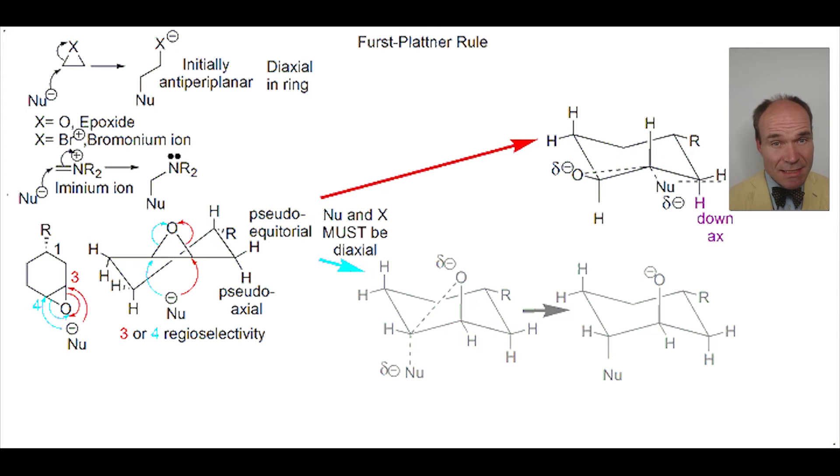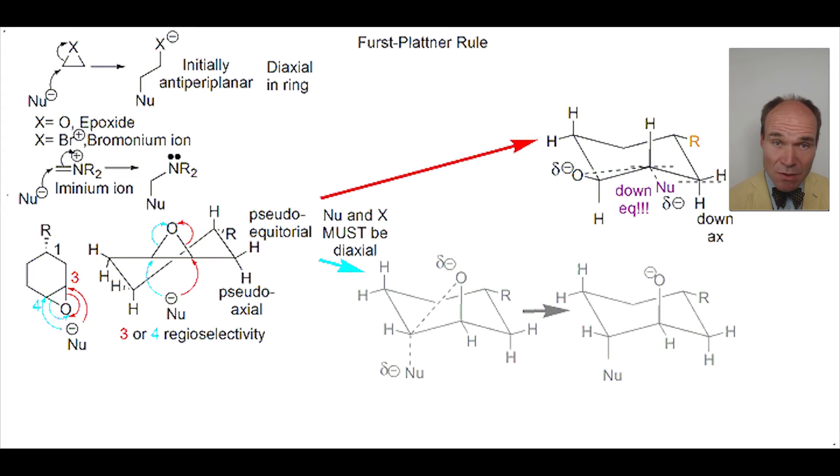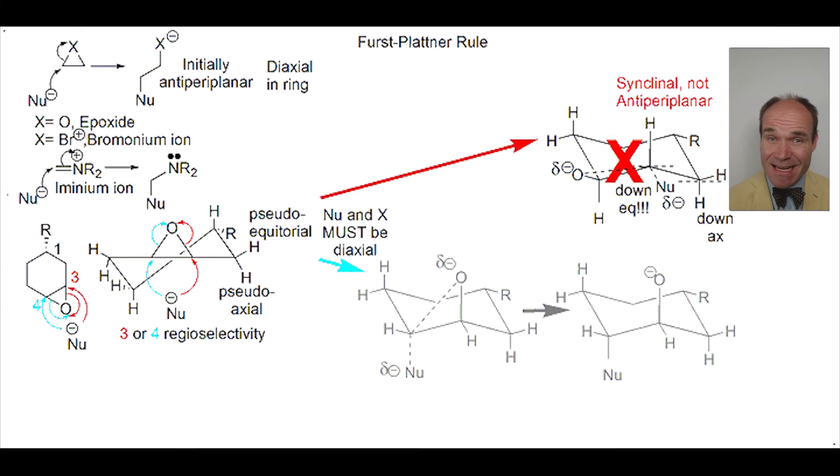This hydrogen substituent is down and axial. So, on the next carbon, where the nucleophile is also down, it must be equatorially oriented, because the R group must be equatorial to avoid 1,3-diaxial interactions. The problem is that the nucleophile isn't anti-periplanar to the oxygen. It would allow optimal orbital orientation, but synclinal.